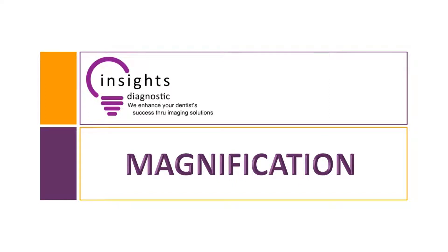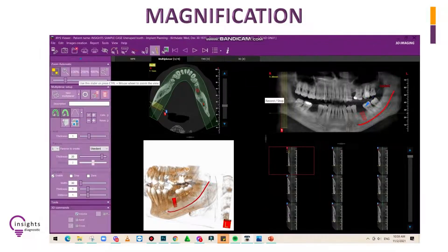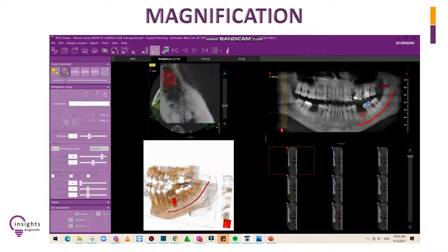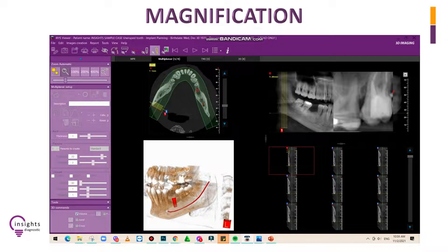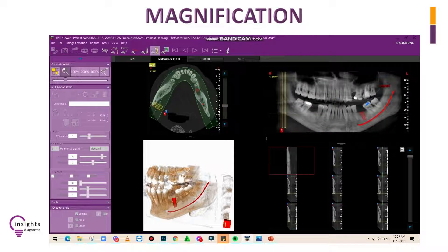Magnification. To inspect the microstructures of an image, click on the magnifying lens icon. Hover your mouse cursor on the part of the image view to see a closer look. To disable the magnifying glass function, just right click.